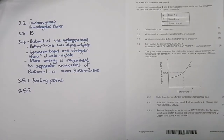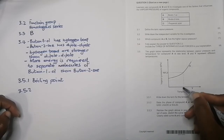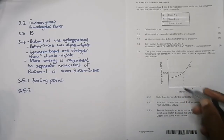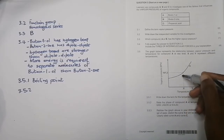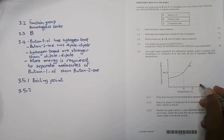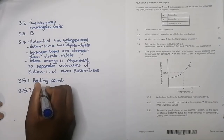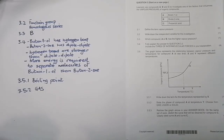For 3.5.2, they say state the phase of compound A at temperature Y, choosing between gas, liquid, and solid. Before temperature X, the compound is in the liquid phase because it hasn't vaporized yet. But once we reach the boiling point, the compound starts to vaporize, so at temperature Y — which is beyond the boiling point — it would be a gas.